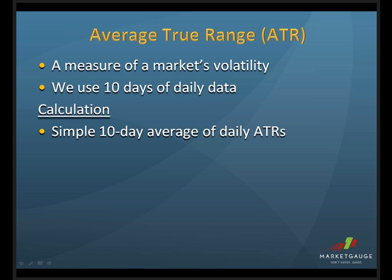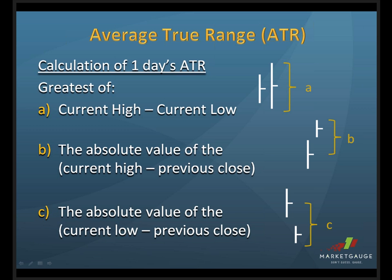So what is a daily average true range? It's hard to find a formula that really says this in an intuitive way, but I'm hoping the pictures here will explain how this works. When we say average true range — rather than just average range — the idea behind the average true range calculation is that you're trying to measure how much volatility the stock had today relative to its close from the prior day.